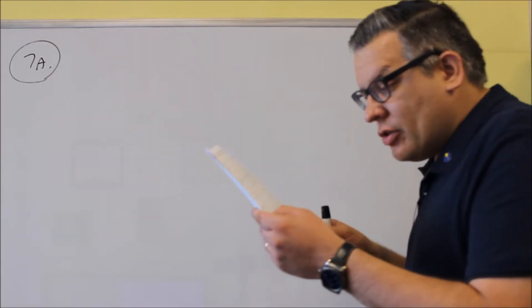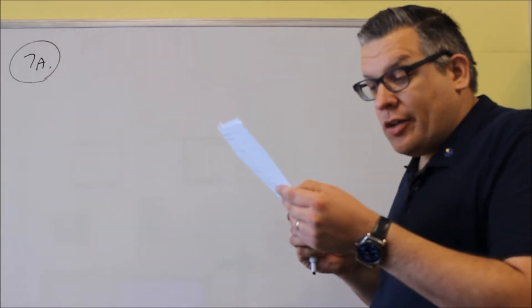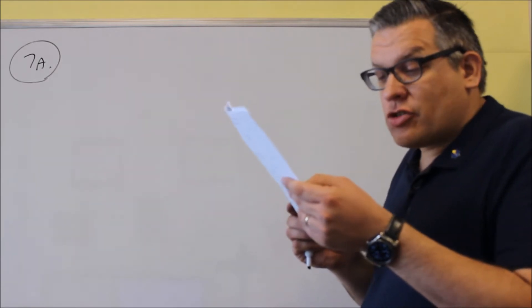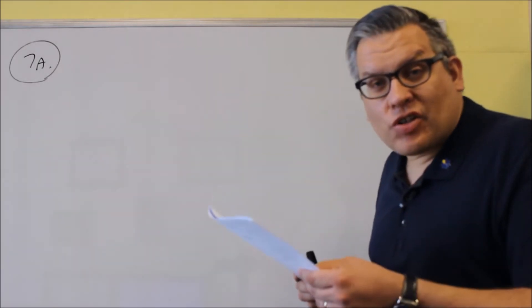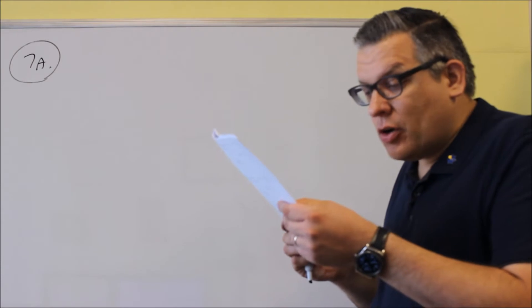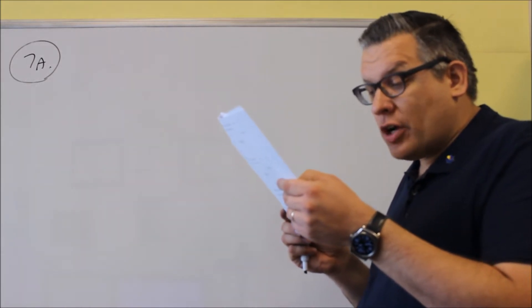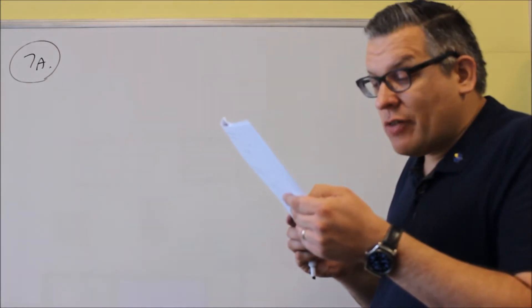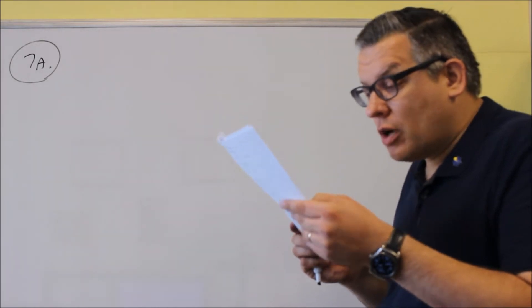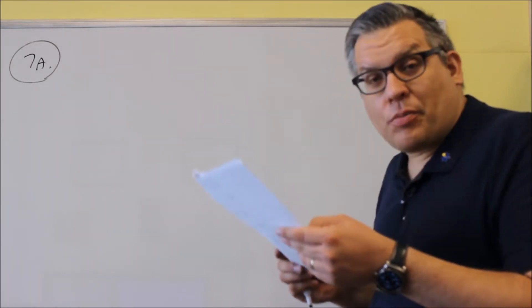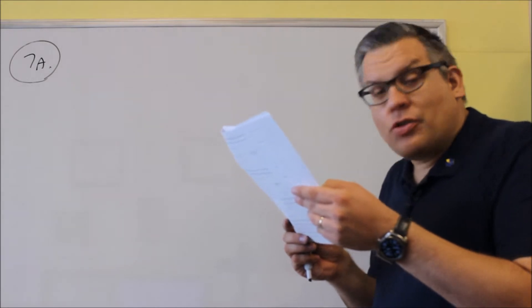For 7a, I'm going to read this. It's a word problem talking about the tallest freestanding structure. A person is standing 619 feet away from the base of the building, and we're given an angle of depression from the top of the building to the person of 77.013 degrees. We want to approximate the height of this building to the nearest foot.